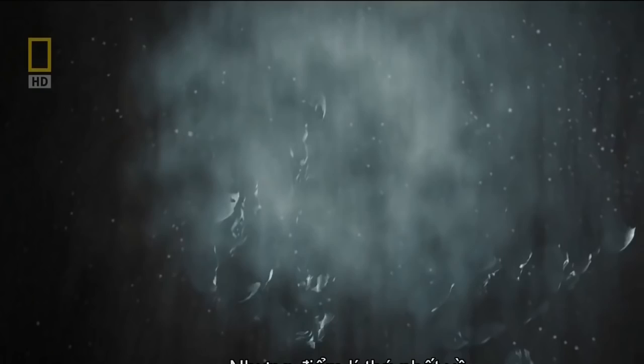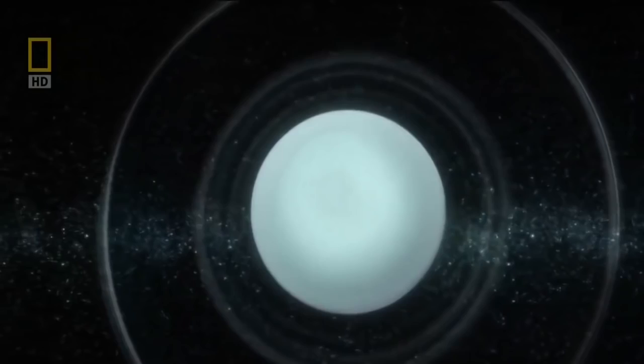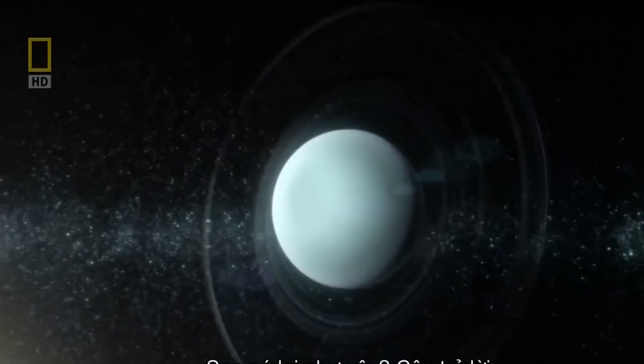But Uranus's most striking feature is its lopsided tilt. It's the only planet in the solar system to orbit on its side, resembling a giant bullseye. How did it end up this way? The answer may surprise you.